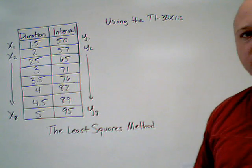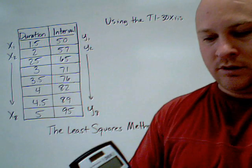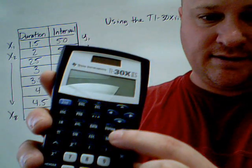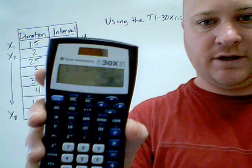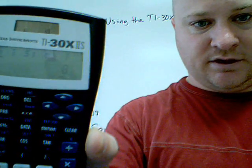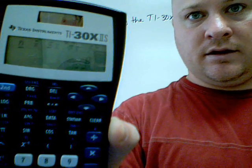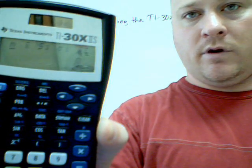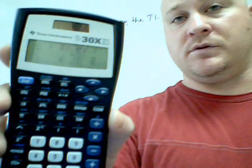Once you've entered all your data, you're going to hit a button that says stat var. If you press that, you'll see this menu. Now when we're doing standard deviation and mean, this is the menu we wanted. But there's more to it than that.